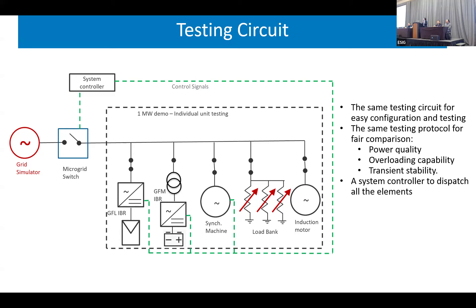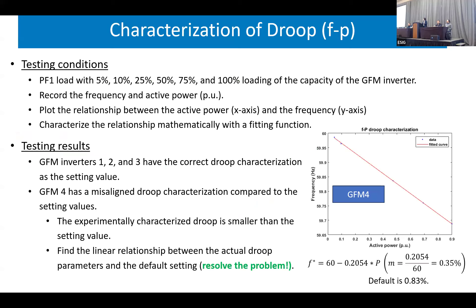We mainly focus on power quality, overloading capability, and transient stability. For our testing we actually use the same droop for all inverters — because if we want to compare, we need to start from the same base. For the frequency droop we use 0.6%, and for voltage we use 5%. Vendors agreed these values work better for distribution and microgrid scenarios. The first step was to characterize droop, because droop is a common language — we need to know exactly what droop each inverter actually has.